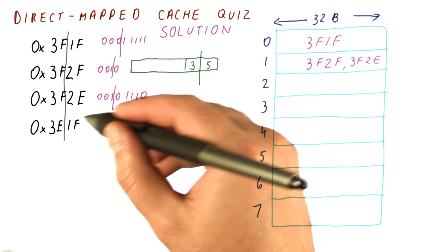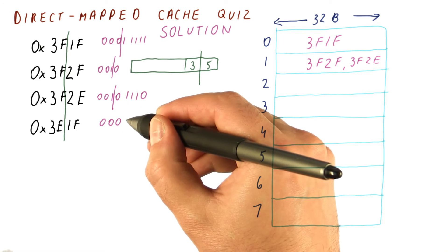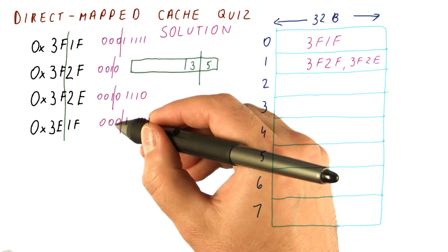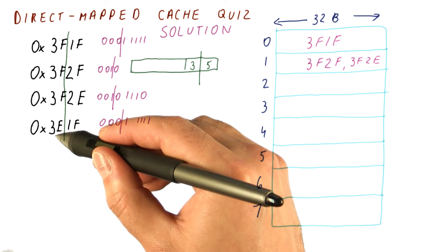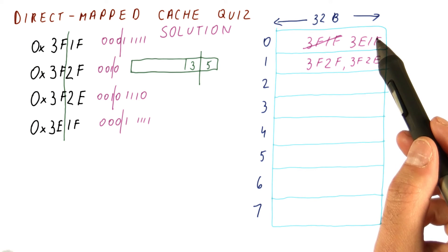And finally, 3E1F is going to map to 001F, so the index is 0, and it's a different block from the one we had previously. So this one will be replaced by this.